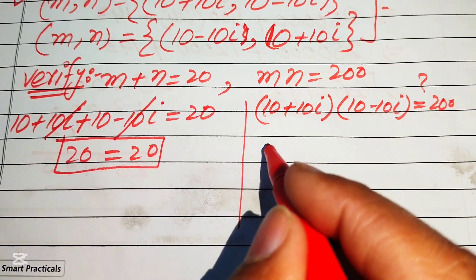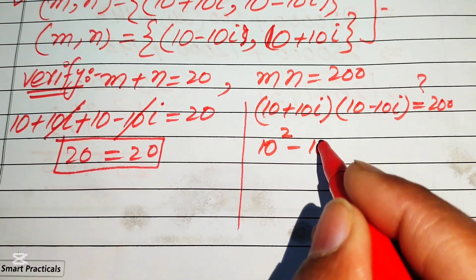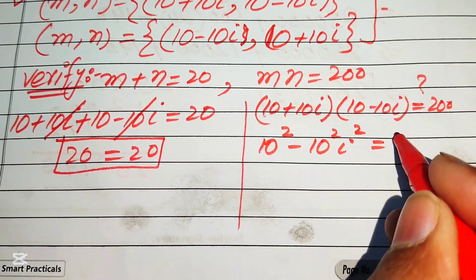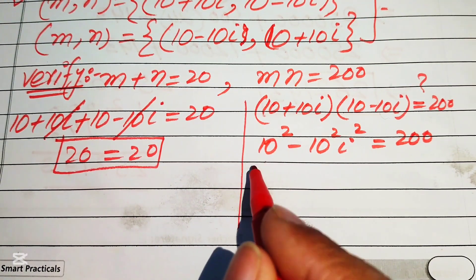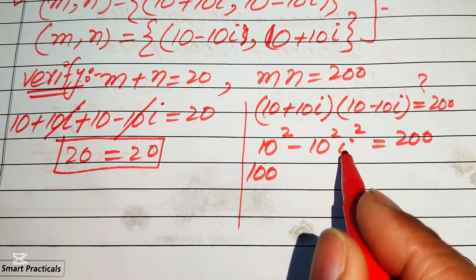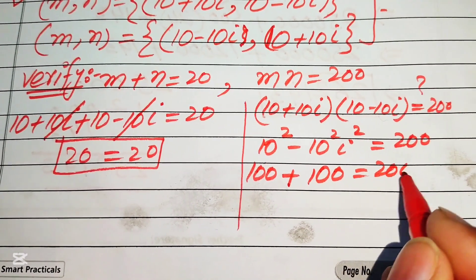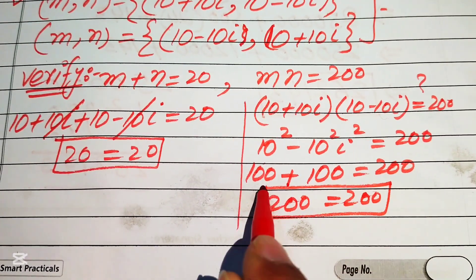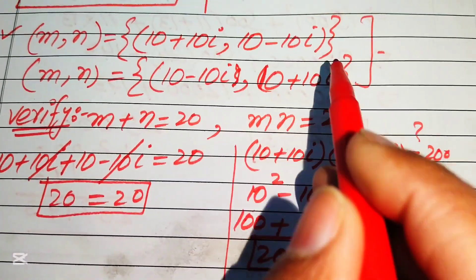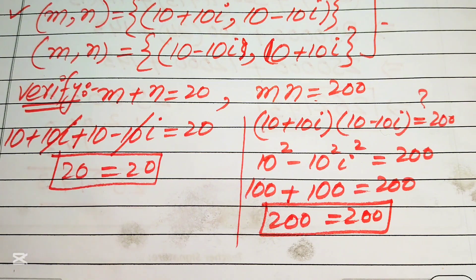Applying the difference of squares formula: (10 plus 10i)(10 minus 10i) equals 10 squared minus (10i) squared equals 100 minus 100 times i squared. Since i squared equals minus 1, this becomes 100 plus 100 equals 200. This confirms the second equation as well. The first solution is verified, and you can verify the second solution similarly. Thank you for watching — please subscribe for more videos.